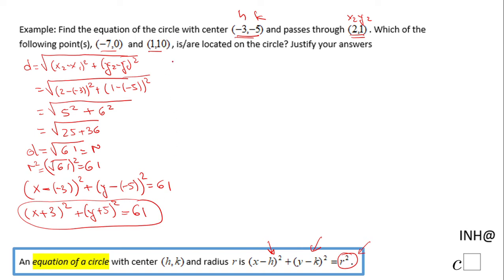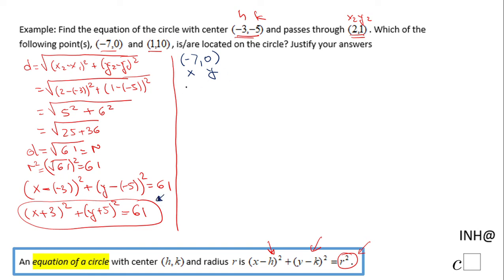Now we're going to move to the second part, where we see which of the following two points—negative 7 and 0, and 1 and 10—are located on the circle. I'm going to start with the first one. The first coordinate is x and the second is y, and we're going to plug it into the equation.